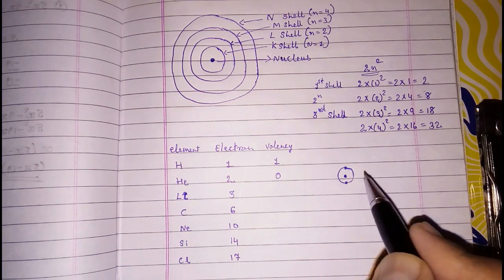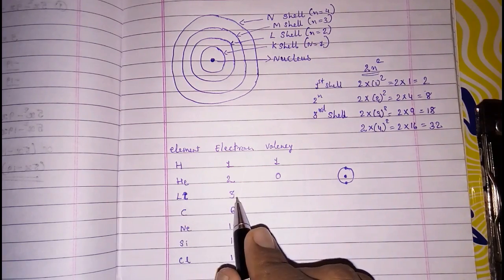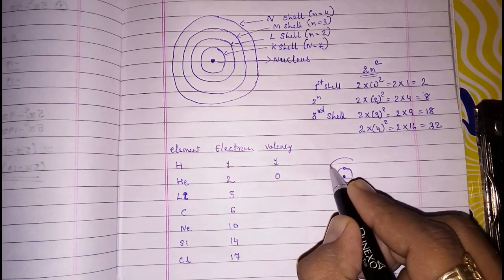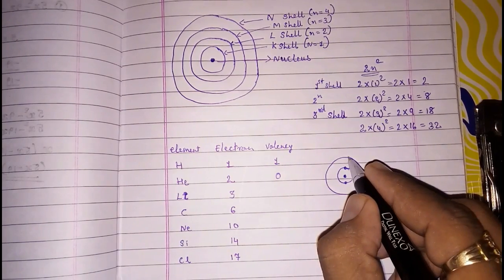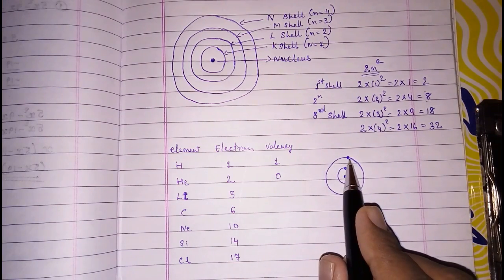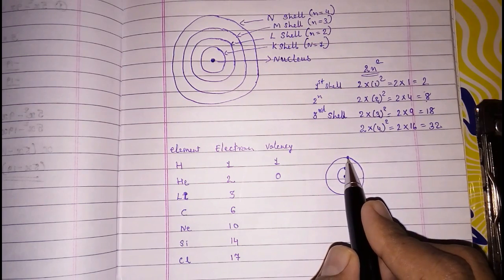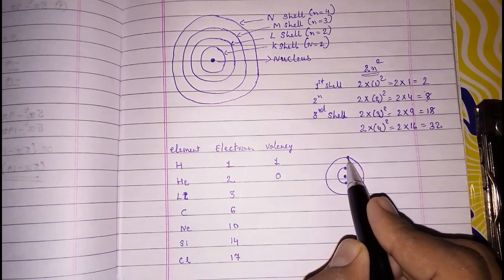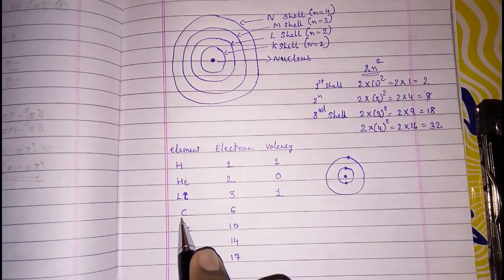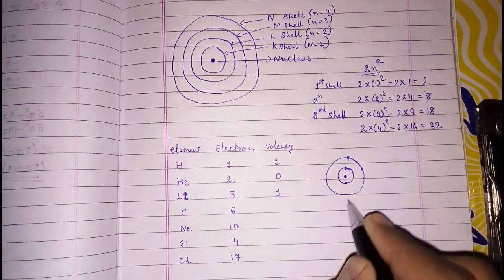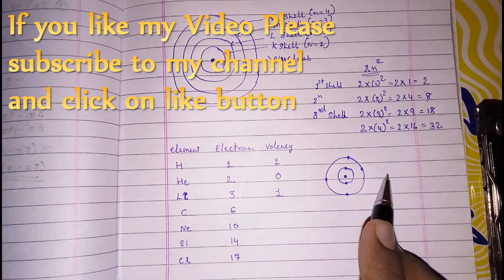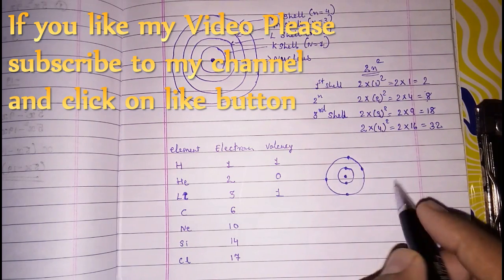For lithium with atomic number 3: two electrons complete the first shell, and one more is in the next orbit. To fill that orbit requires eight electrons, but only one is there. Either it gains seven or loses one — losing one electron is easier. So the valency of lithium is one. For carbon with atomic number 6: two in the first and four in the second orbit. Either it loses four or gains four to become stable, so the valency of carbon is four.